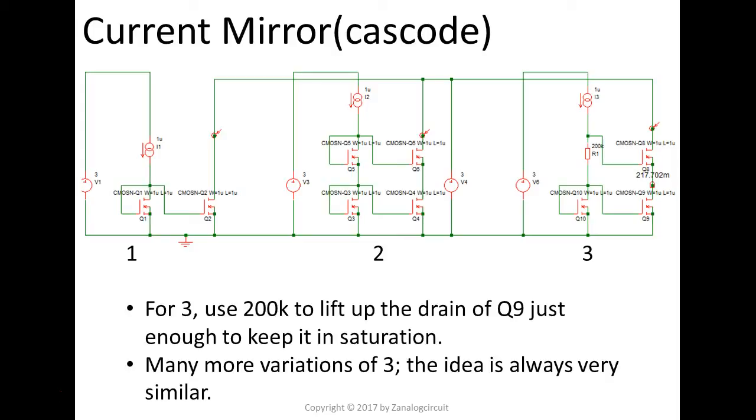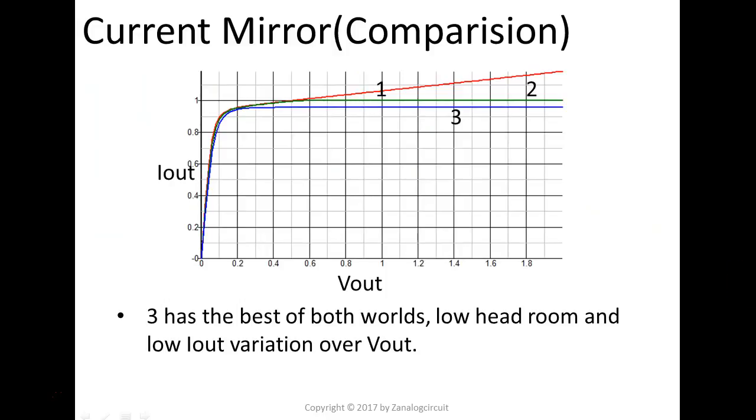So number three really is going to give you the best of both worlds. Let's take a look at the simulation result. Here's the simple current mirror, and this is the first way of doing cascoding, this is the number three way.